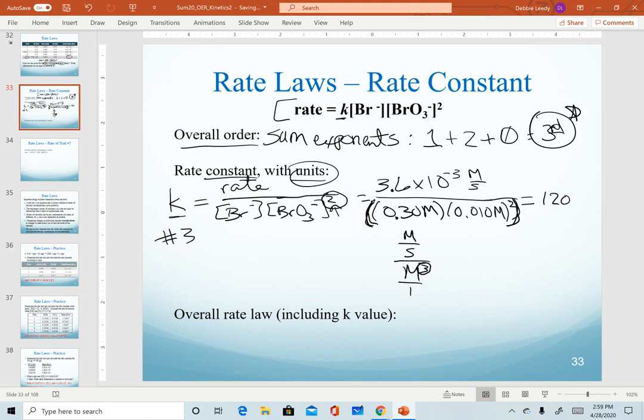Since I'm working with fractions, I'm going to make my denominator a fraction, and then remember that dividing by a fraction is the same as multiplying by the reciprocal. So the setup that I'm solving now is in this box. Of course, my molarity on top cancels, my molarity on the bottom reduces down to two. And so my units for k here will be 1 over molarity squared times seconds.